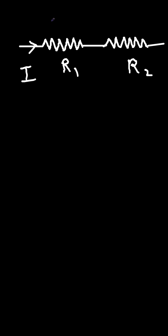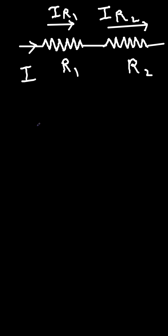Always remember that in a series circuit — like this one here — this is one resistor and this is the second resistor. In a series circuit, the current is the same through all elements. So this current, let's call it I, will be the same in both resistors. That is, IR1 is equal to IR2 is equal to I.